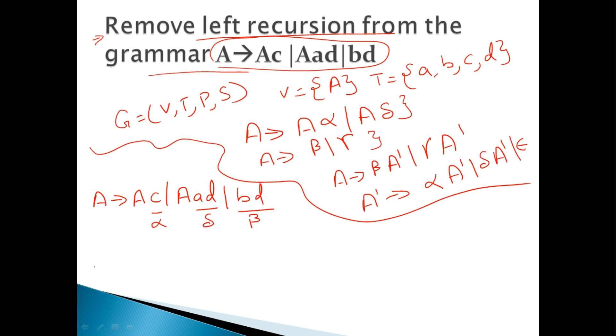So we will introduce a new non-terminal A prime or A dash having these productions. A is rewritten as beta A dash. So B D A dash, and A dash is rewritten as alpha, that is C A dash.